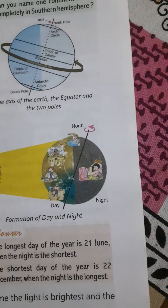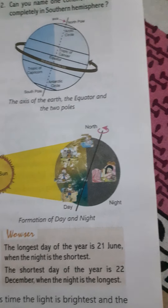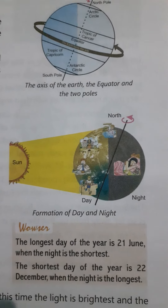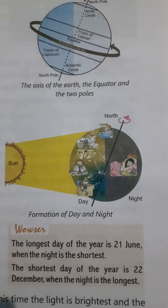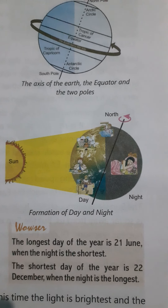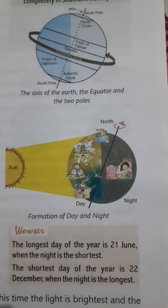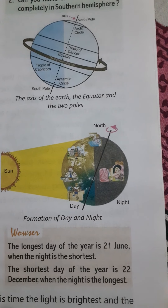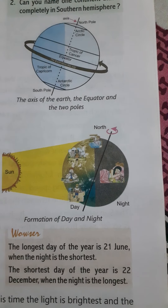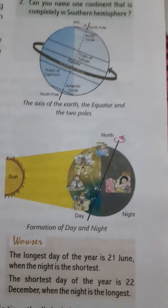So in this way, the day and night form — just because of the rotation of the Earth on its axis.